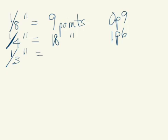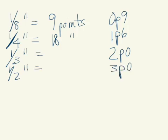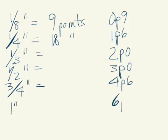One-third of an inch is 2 picas. One-half an inch is 3 picas. Three-quarters of an inch is 4p6. And 1 inch is going to be 6 picas, of course.